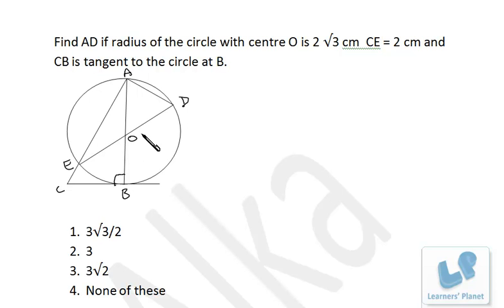ED is diameter, that means this angle will also be 90 degrees because that is the angle in semicircle.